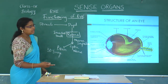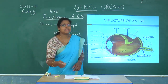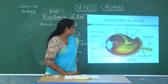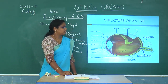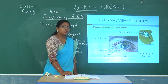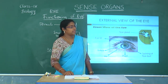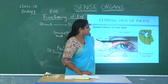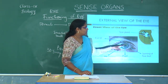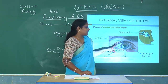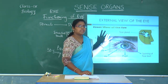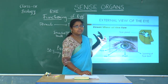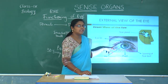A three-dimensional image is formed in the brain, and that is how we can appreciate the beauty of nature and see the things happening around us. Next, let us see how the eye is protected. At the beginning of the session we saw the external parts of the eye — we discussed eyebrows, eyelids, and eyelashes.